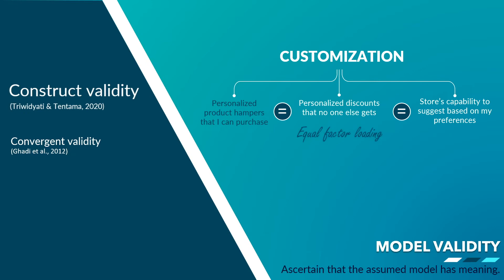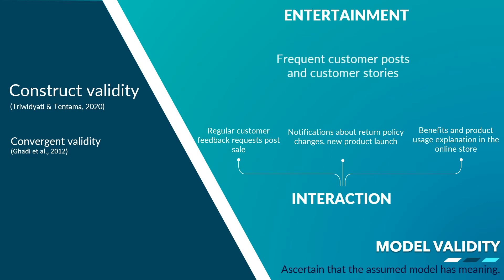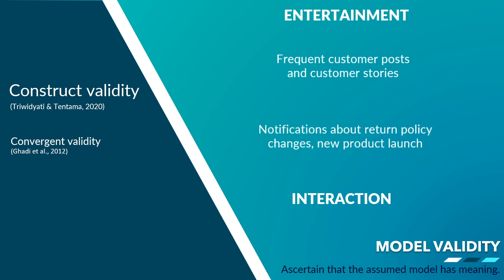For instance, when I select three statements to compute the customization dimension, the factor loading of the statement 'personalized product offers that I can purchase' should have similar values to other statements like 'personalized discounts' and 'suggestions based on my preferences.' If any one statement's value is very different from the others, then it should not be in that group — its presence can only decrease the construct validity of the customization dimension. This can be determined with the average variance extracted (AVE) value, and it should be more than 0.5.